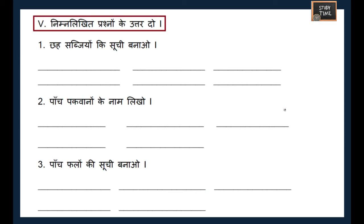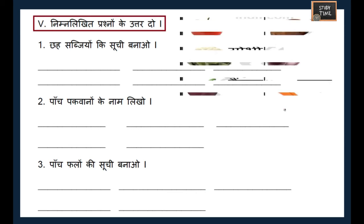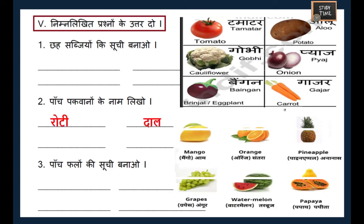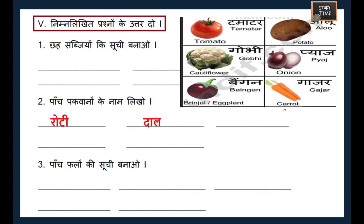The next question asks you to write a list of six vegetables (shaak-sabzion ki suchi banao). You can write tomato, aalu, gobi, pyaaz, baingan, gajar — any six vegetables you know.